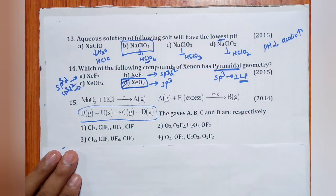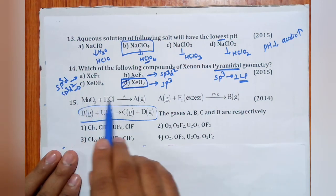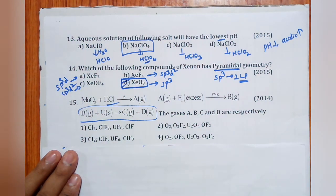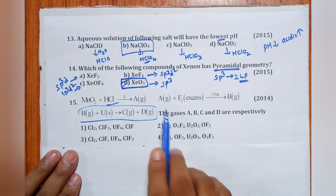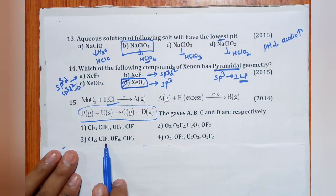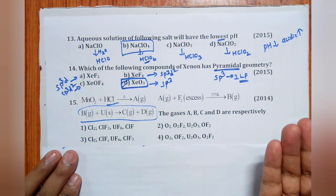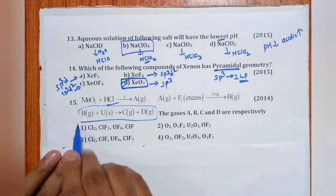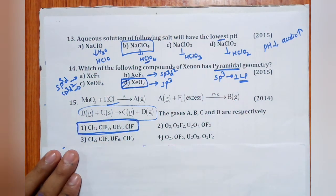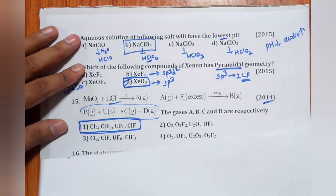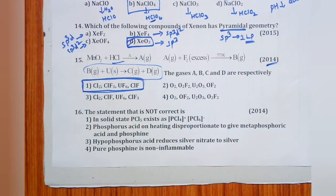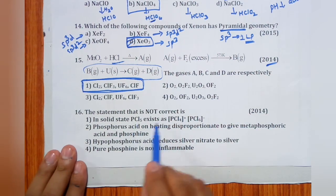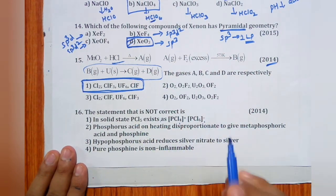Question 15 (2014): MnO2 reacts with HCl to give gas A (Cl2). Cl2 with excess F2 gives ClF3 (since F is in excess, ClF3 forms — F:Cl ratio means trifluoride). ClF3 then reacts with uranium to form C and D. Answer is the option showing Cl2 and ClF3.